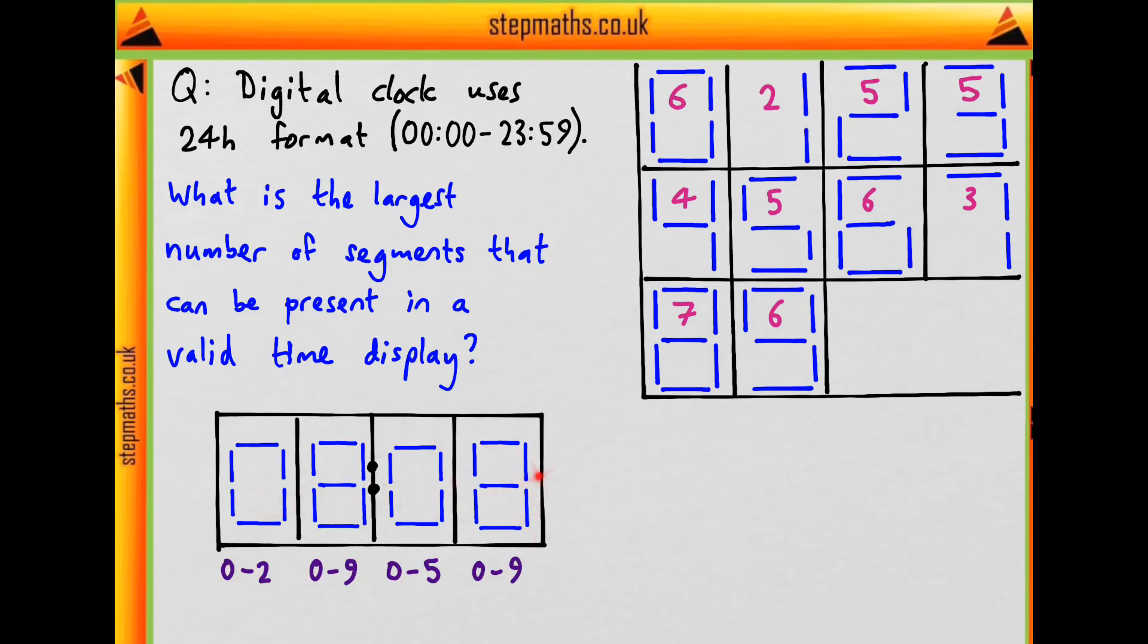So 0808 is the time with the maximum number of segments and we know it's a valid time. How many segments do we have total? We have two 0's which are both 6 and two 8's which are both 7. Two 6's is 12 plus two 7's is 14, so 12 plus 14 gives 26 segments. This corresponds to answer D.